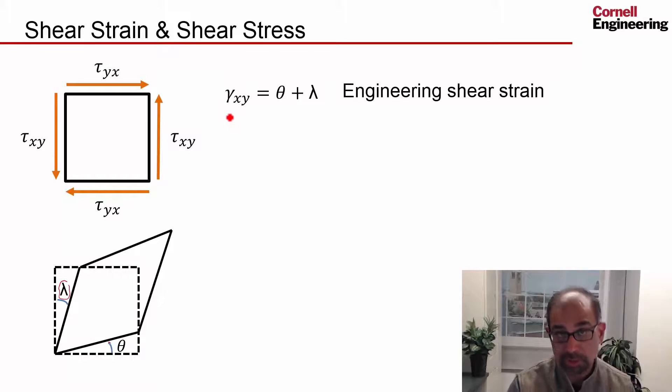There is also a tensorial shear strain that's denoted as epsilon, and that's gamma xy divided by two, because in the tensorial shear strain you take the average of this change in angle.